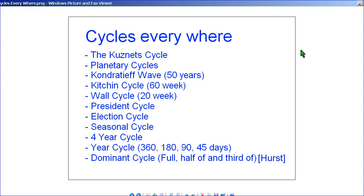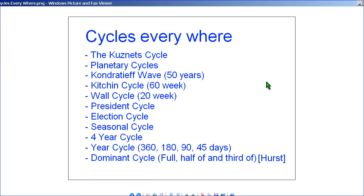Cycles are everywhere and have been studied by many people under different names. You can research them on the web: for example, the Kitchen cycle at 60 weeks, the 20-week cycle, the presidential election cycle, seasonal cycles, and planetary cycles. You can also have a year cycle breaking down to days — a full year, half year, quarter year. Jim Hurst actually worked with cycle formatters to find the dominant cycle in a data series and divide it by a third or half for trading.